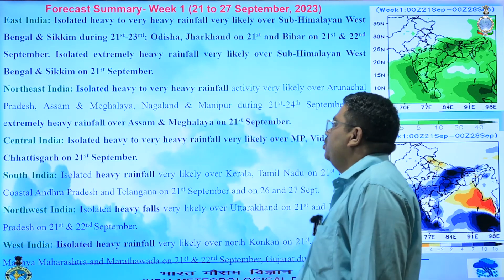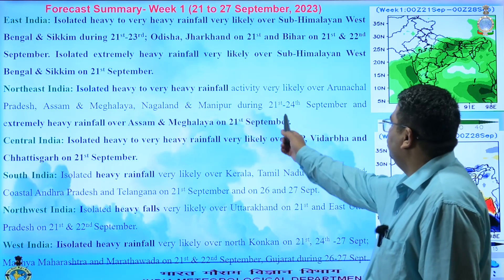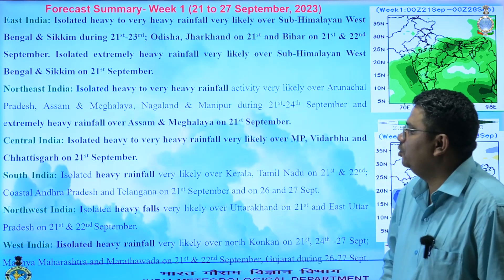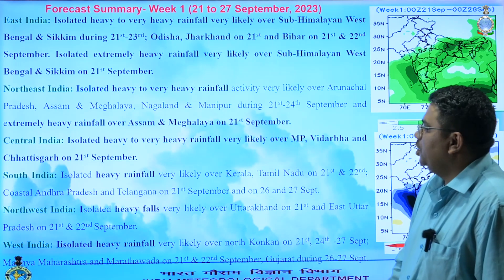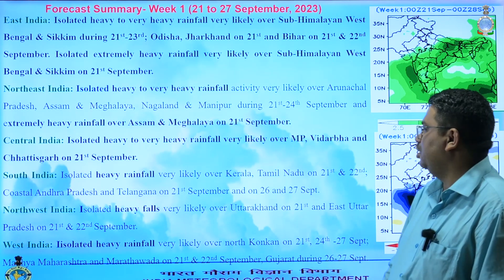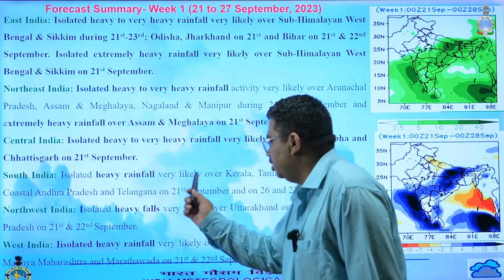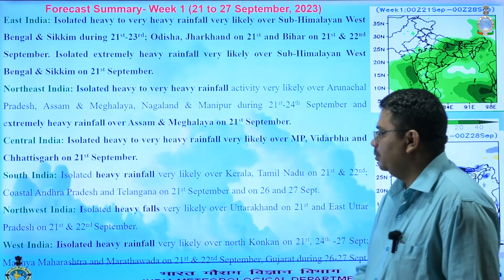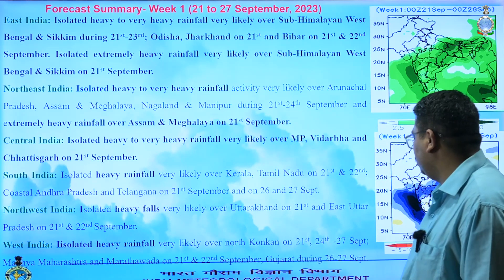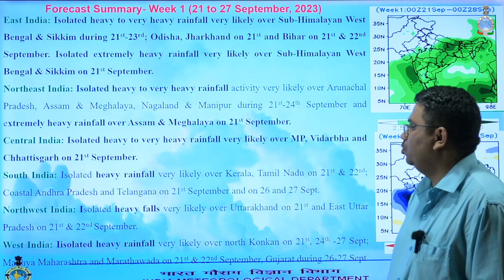Over northeast India, isolated heavy to very heavy rainfall is also likely over Arunachal Pradesh, Assam-Meghalaya, Nagaland-Manipur, Mizoram-Tripura during 21st to 24th, with extremely heavy rainfall expected over Assam-Meghalaya on 21st. Over central India, heavy to very heavy rainfall is likely over Madhya Pradesh, Vidarbha and Chhattisgarh today. In south India, heavy rainfall is likely over Kerala and Tamil Nadu today and tomorrow, and over coastal Andhra Pradesh and Telangana on 21st and on 26th and 27th. Over northwest India, heavy rainfall is expected over Uttarakhand today and Uttar Pradesh today and tomorrow. Over western India, isolated heavy rainfall is likely over north Konkan on 21st and 24th to 27th, Madhya Maharashtra and Marathwada on 21st and 22nd, and over Gujarat during 26th and 27th.